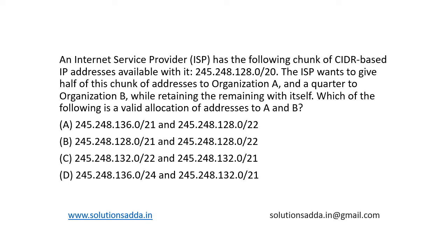This is a question from Computer Networks. An internet service provider has the following chunk of CIDR-based IP addresses available: 245.248.120.0/20. The ISP wants to give half of its chunk of addresses to organization A, a quarter of it to organization B while retaining the remaining addresses itself. Which of the following is a valid allocation of addresses to A and B?